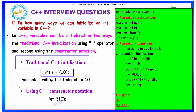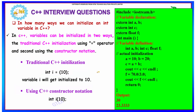The first method is using the traditional assignment operator. For example, writing int i = 10 initializes the value of i to 10. The second method is using C++ constructor notation, where you write int i(10) — the constructor runs and sets the value of i to 10. These are the two ways to initialize a variable in C++, as shown in the program here.